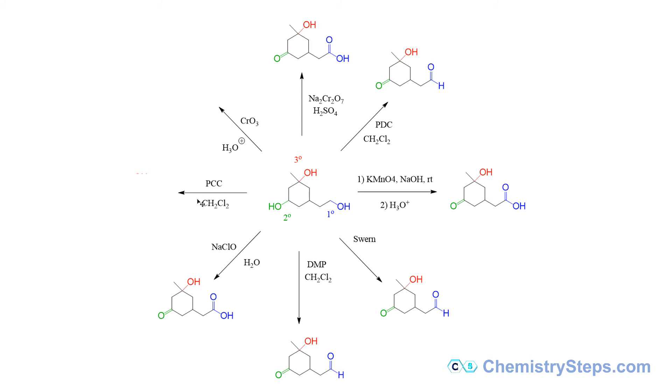Next we have the PCC, so PCC is pyridinium chlorochromate, similar to the pyridinium dichlorochromate. It's another selectively oxidizing agent that is converting the primary alcohol into an aldehyde.